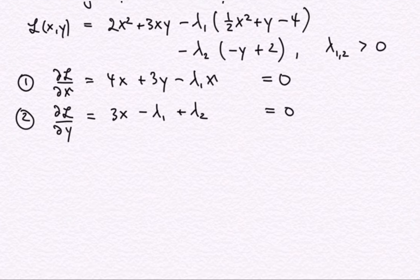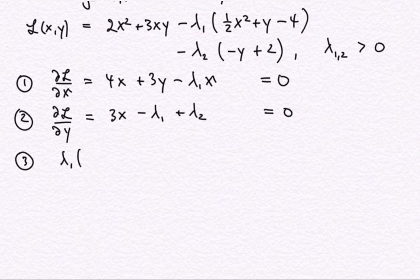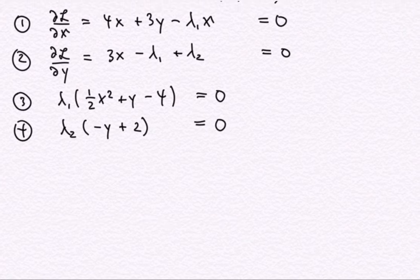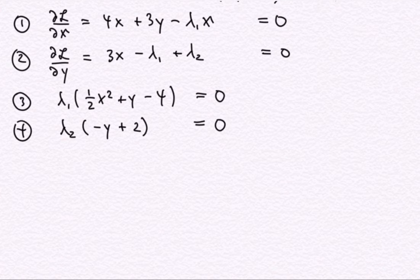The Kuhn-Tucker conditions are: condition 1, the partial derivative with respect to x: 4x plus 3y minus λ₁x equals zero. Condition 2, partial derivative with respect to y: 3x minus λ₁ plus λ₂ equals zero. Complementary slack: λ₁ times ((1/2)x² plus y minus 4) equals zero, and λ₂ times (minus y plus 2) equals zero.